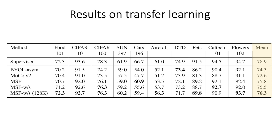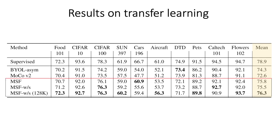Finally, let us take a look at the transfer learning results. We freeze the backbone and train only a single linear layer for each dataset; the mean over all datasets is reported in the last column. Given similar computational budgets, our models outperform other SOTA methods. Note that the default memory bank size is 1 million, and reducing it to 128K in fact results in the best performing model.